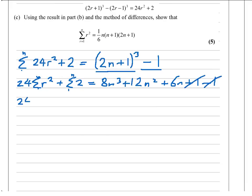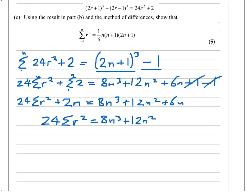So what have I got here? I've got 24 times the sum of r² from 1 to n, plus 2n equals. I won't pull anything out just yet. I'm going to take that 8n³ across, so plus 12n² plus 6n. You can see how close we are. If I take that 2n across, that leaves me with plus 4n.